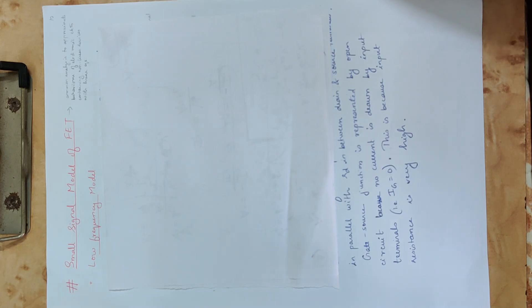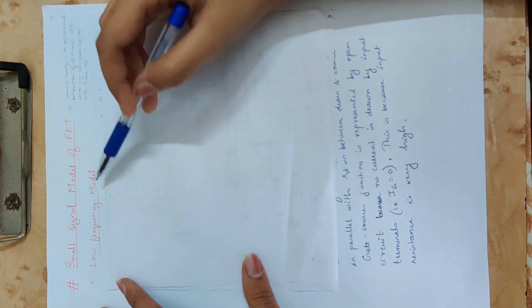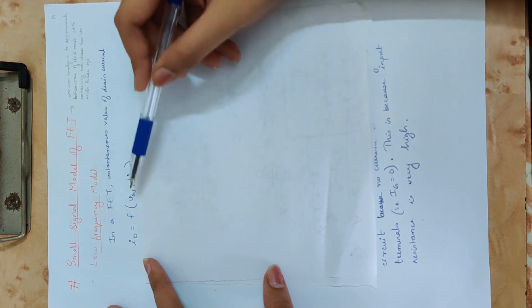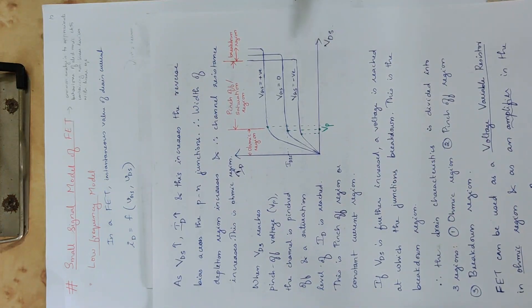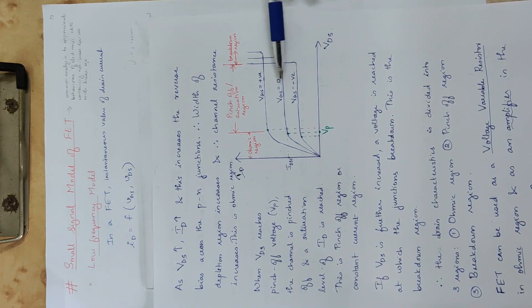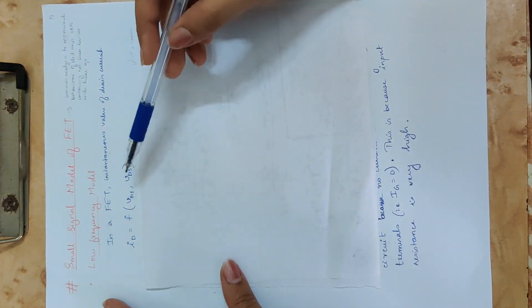We will approximate the nonlinear devices. This is the low frequency model. Small signal model of FET is a low frequency model. The drain current ID is a function of gate source voltage VGS and drain source voltage VDS.